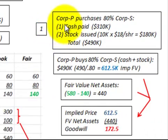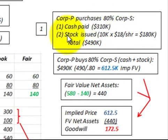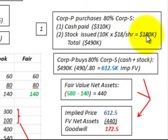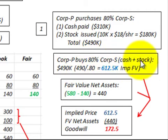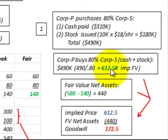Corporation P purchases 80% of Corporation S. First, they're going to pay a cash payment of $310,000. Then they're going to issue 10,000 shares of their common stock at $18 per share, for a total of $180,000. So their total investment in Sub-Corporation S is $490,000. Dividing that by 80%, the implied fair value of Sub-Corporation S is $612,500.